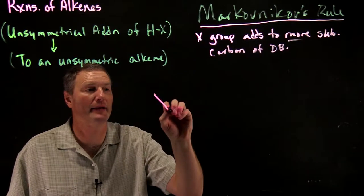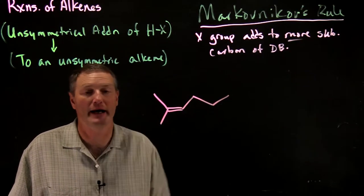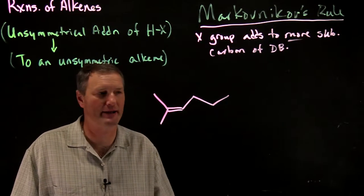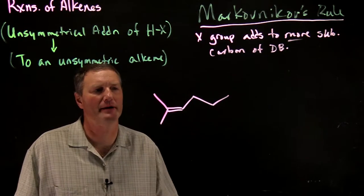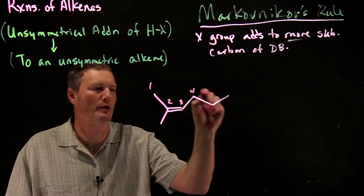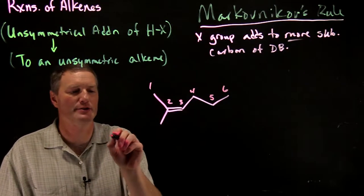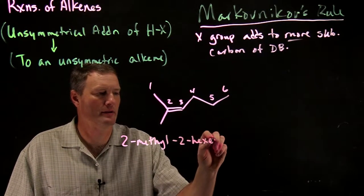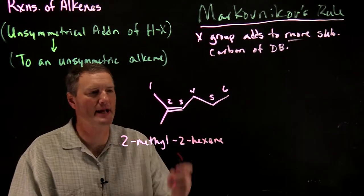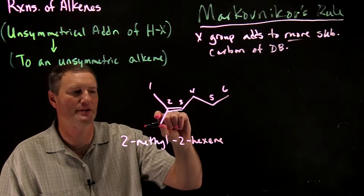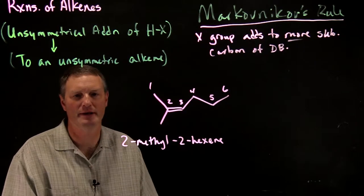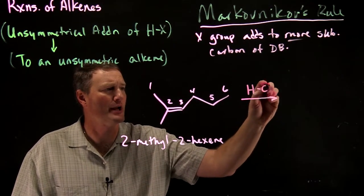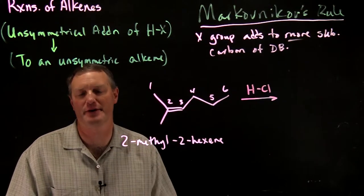Let's apply Markovnikov's rule to determine the major product when adding HX to an unsymmetric alkene. First let's name the starting material: counting the carbons gives us six in the chain with a methyl group at carbon two and a double bond at carbon two, so this is 2-methyl-2-hexene. Notice there's no cis or trans here because the two methyl groups are equivalent. Now if we add HCl to this compound, can we predict the major product?